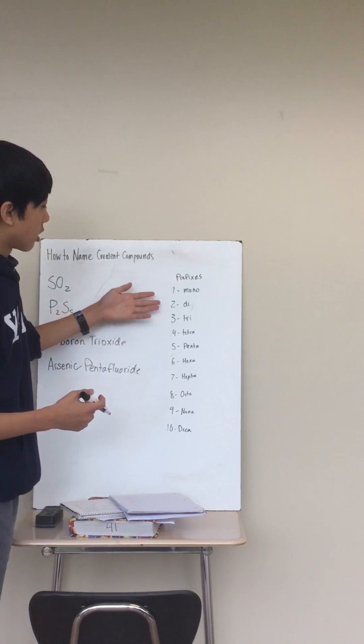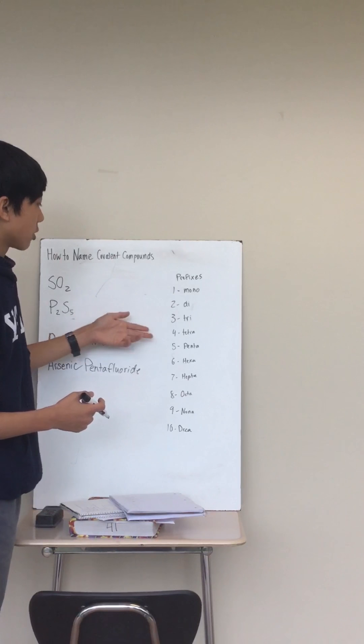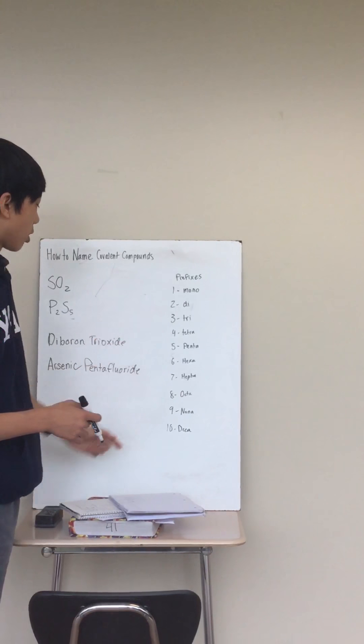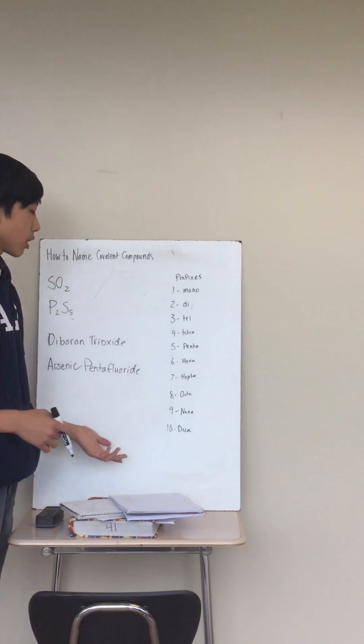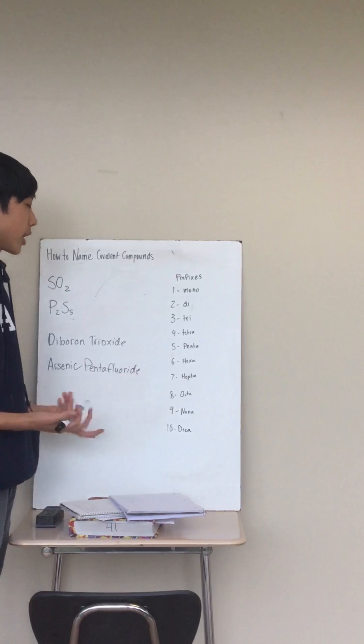So we have: one is mono, two is di, three is tri, four is tetra, and so on all the way down to ten. Although rarely you will use anything larger than eight.